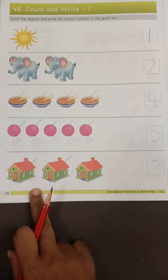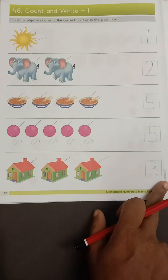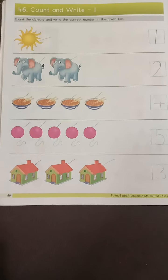Okay kids. So this is how you slowly count and write in the box. You understand now? Very good. So bye bye all.